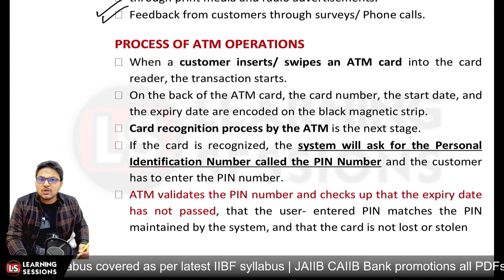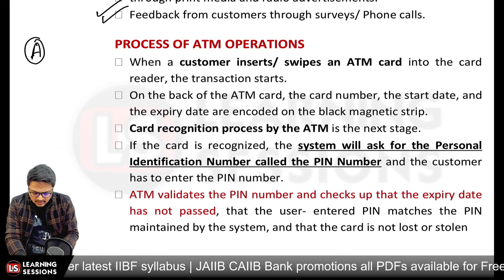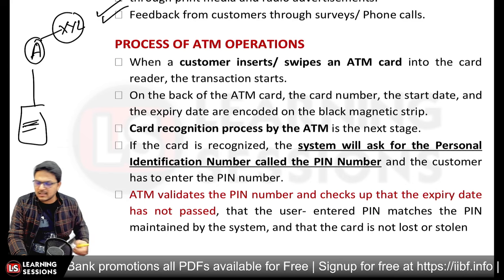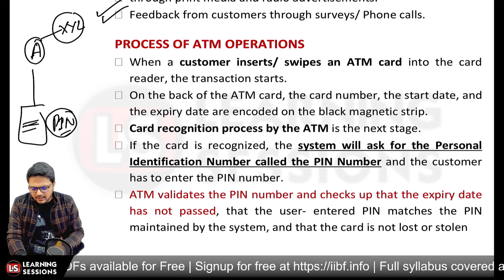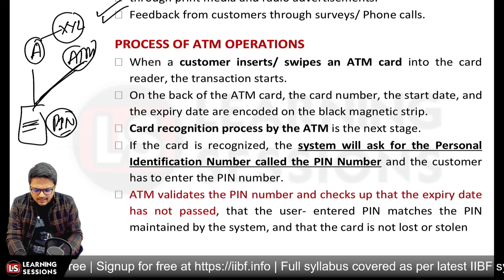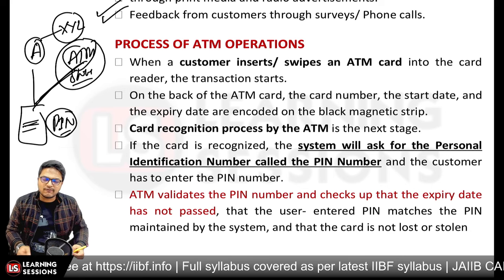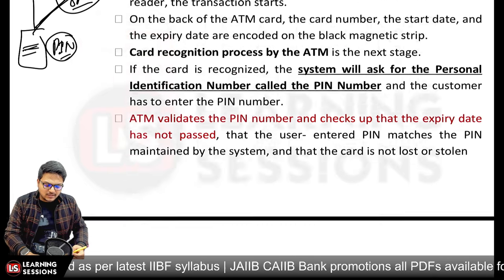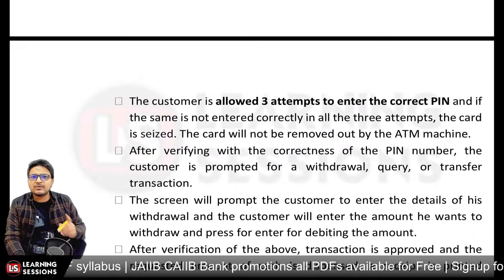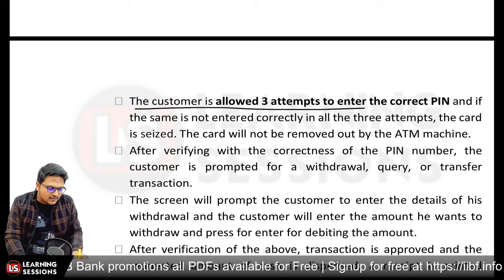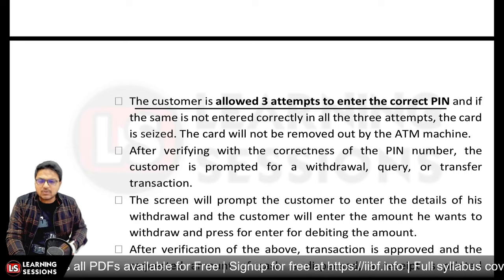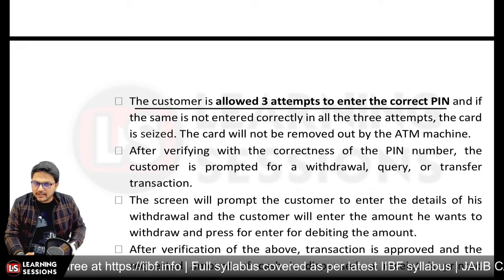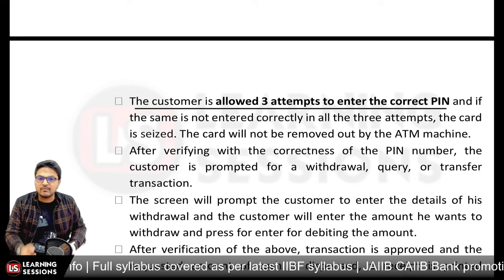The ATM operations process: Customer A of Bank XYZ visits an ATM, inserts or swipes the card, enters the PIN which is cross-checked by the ATM switch for verification and authentication. The customer selects from available facilities such as cash withdrawal or balance inquiry. The customer is allowed three attempts to enter the correct PIN. If all three attempts fail, the account is locked and the customer must visit the branch, or the card may be blocked for 24 hours.